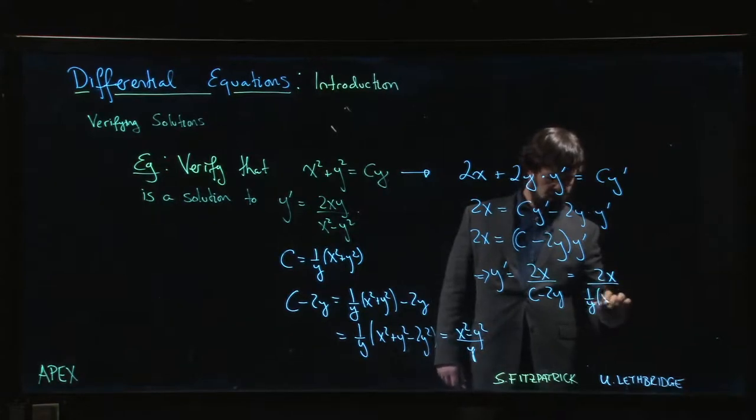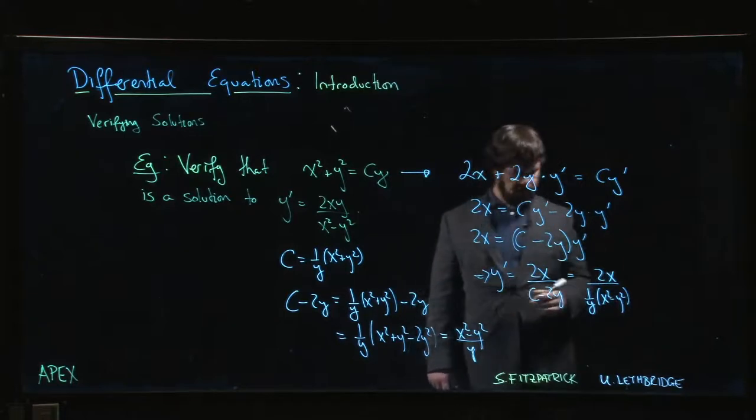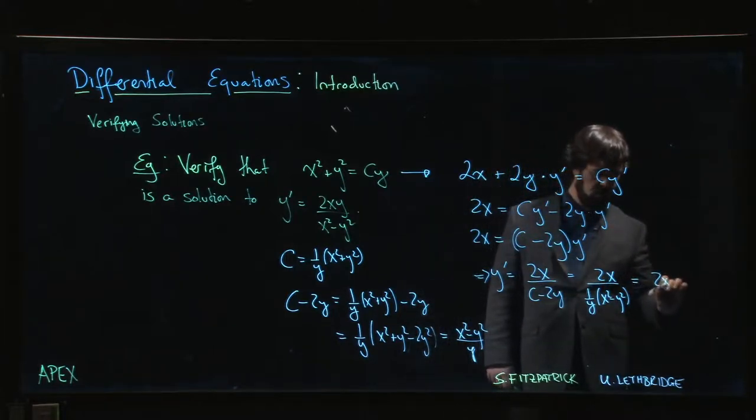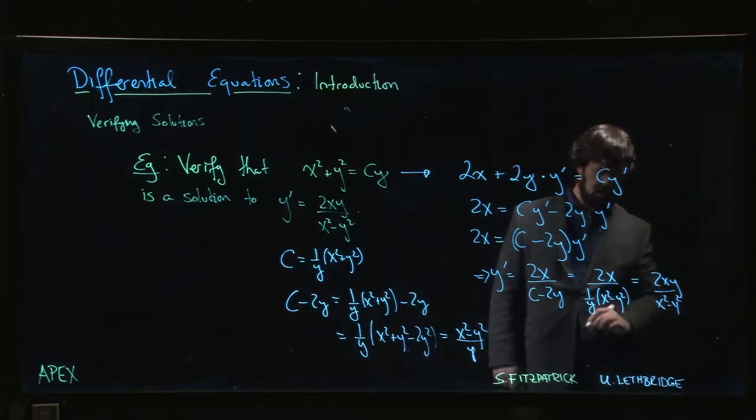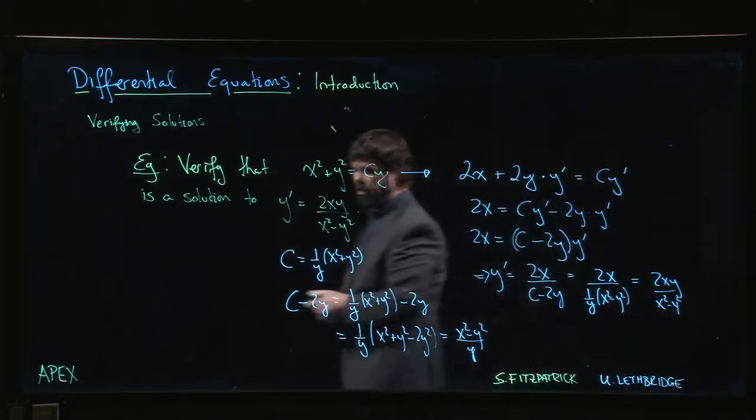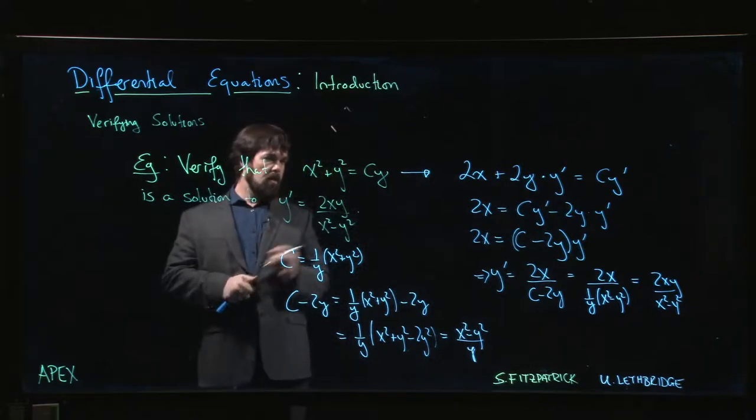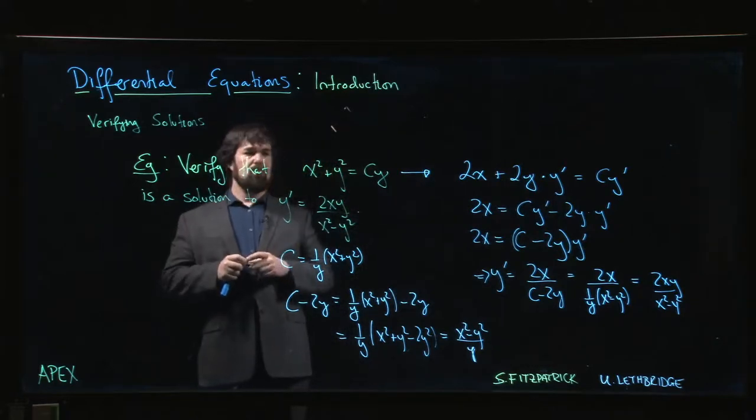This is 2x divided by 1 over y times x squared minus y squared. Multiply top and bottom by y, we get 2xy over x squared minus y squared, which is what we were supposed to get.